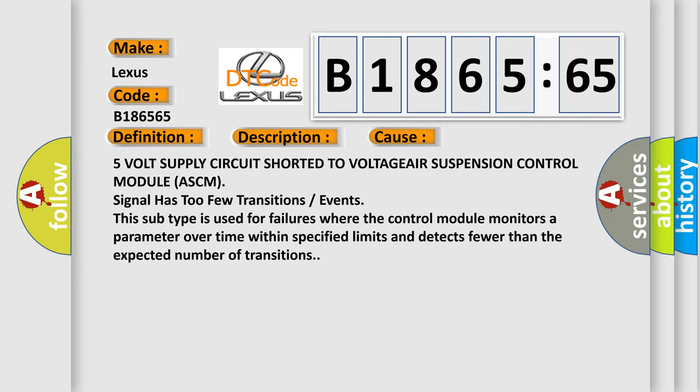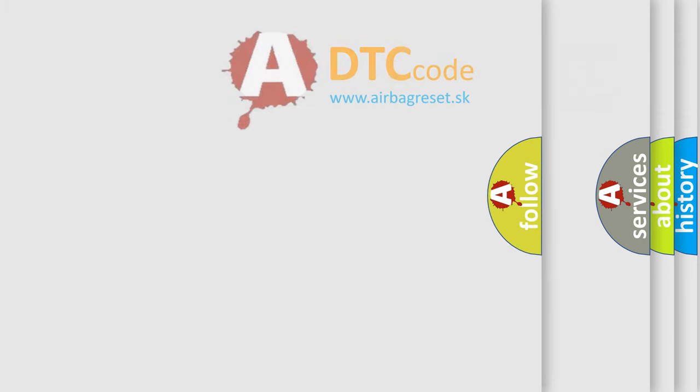This subtype is used for failures where the control module monitors a parameter over time within specified limits and detects fewer than the expected number of transitions.